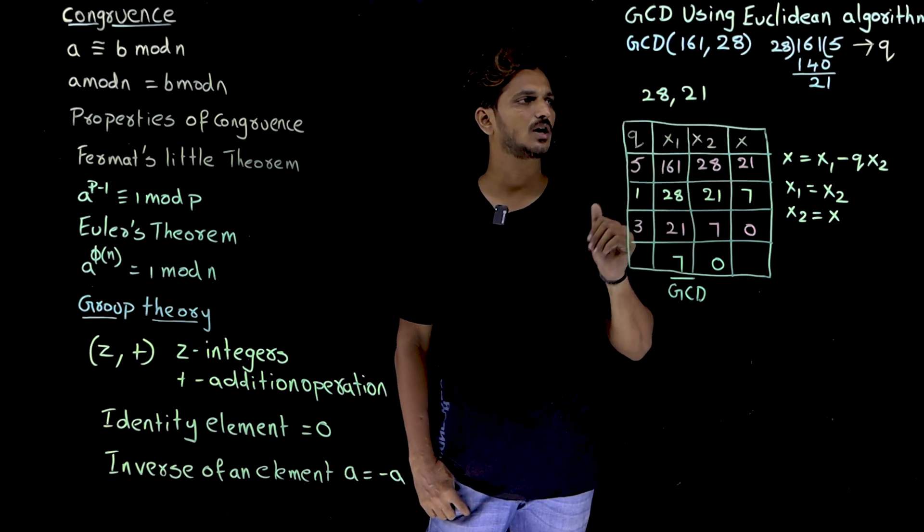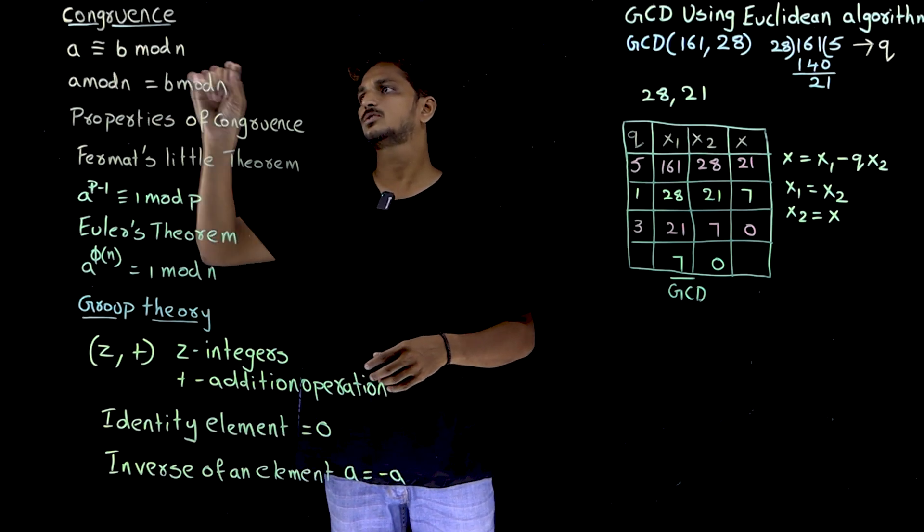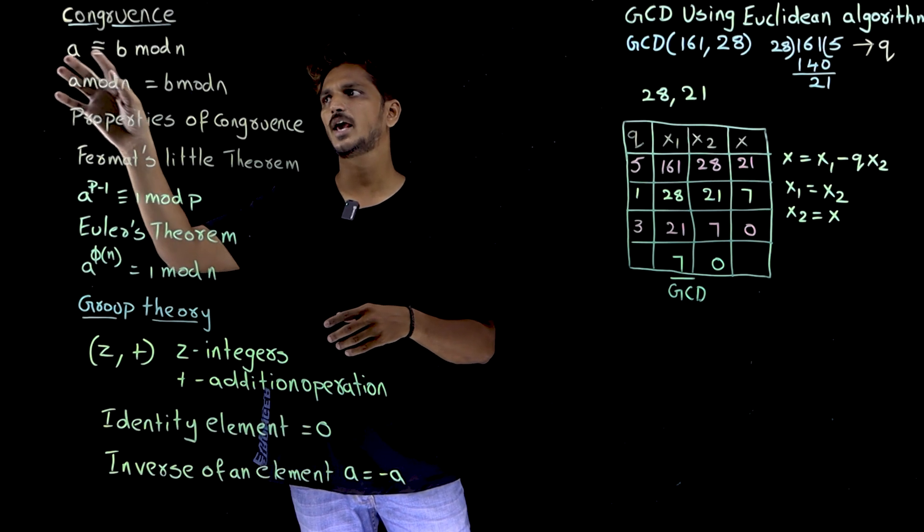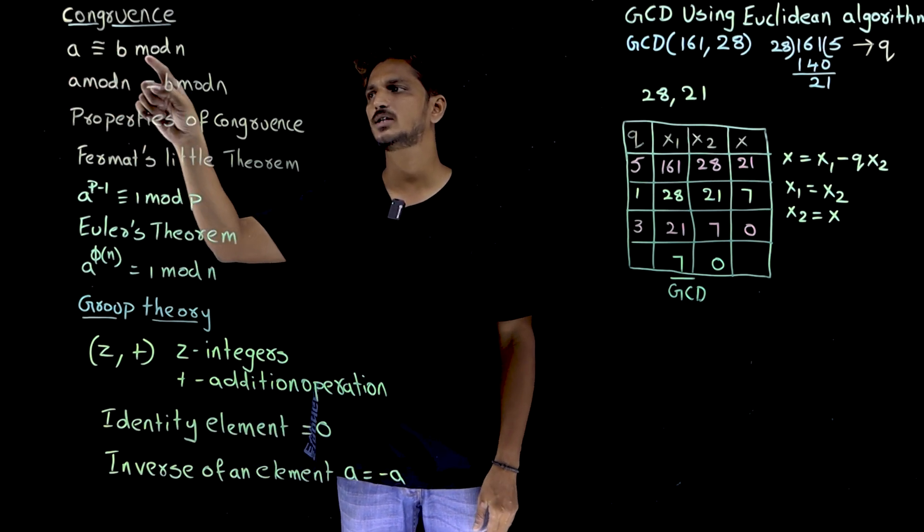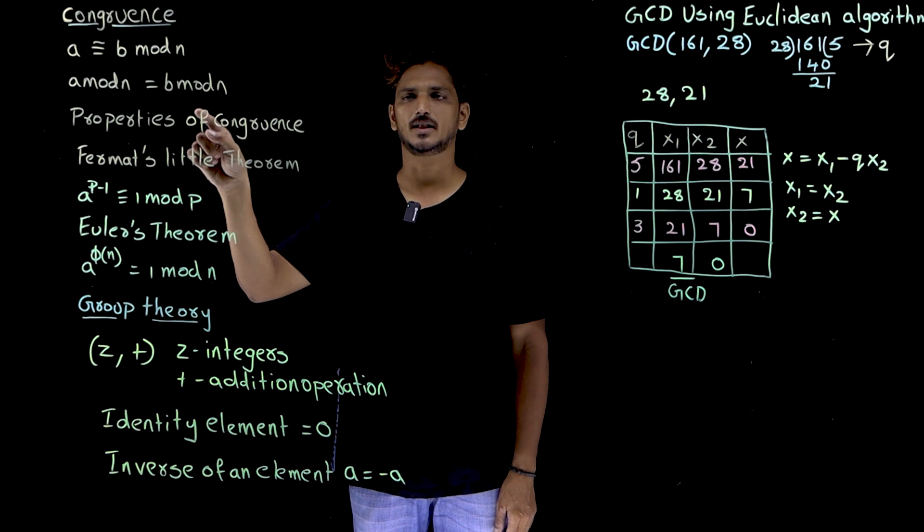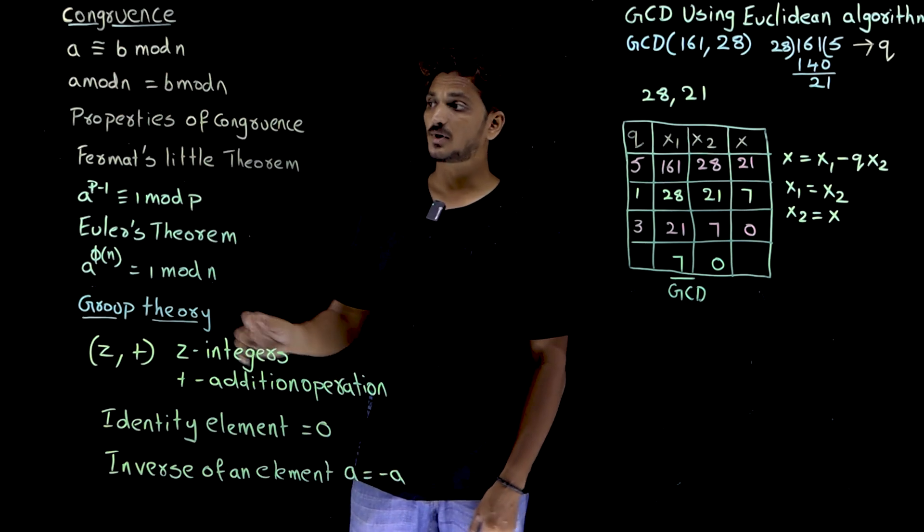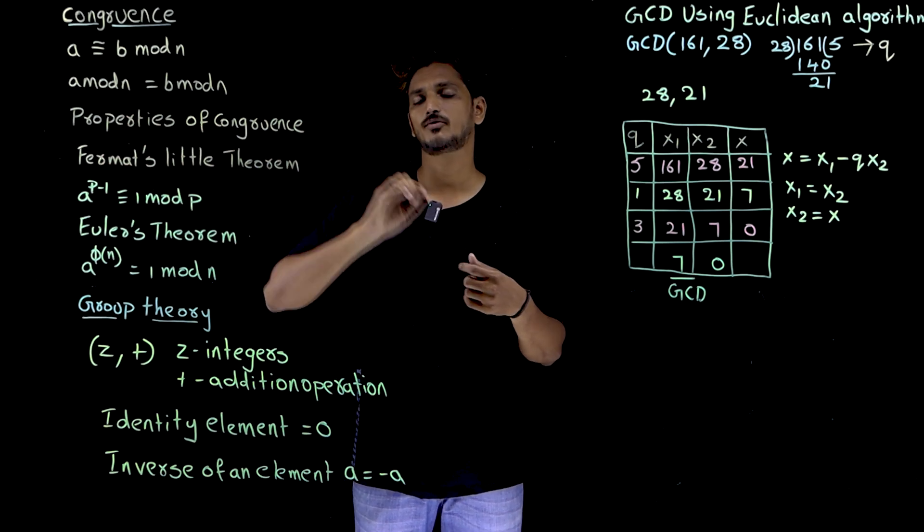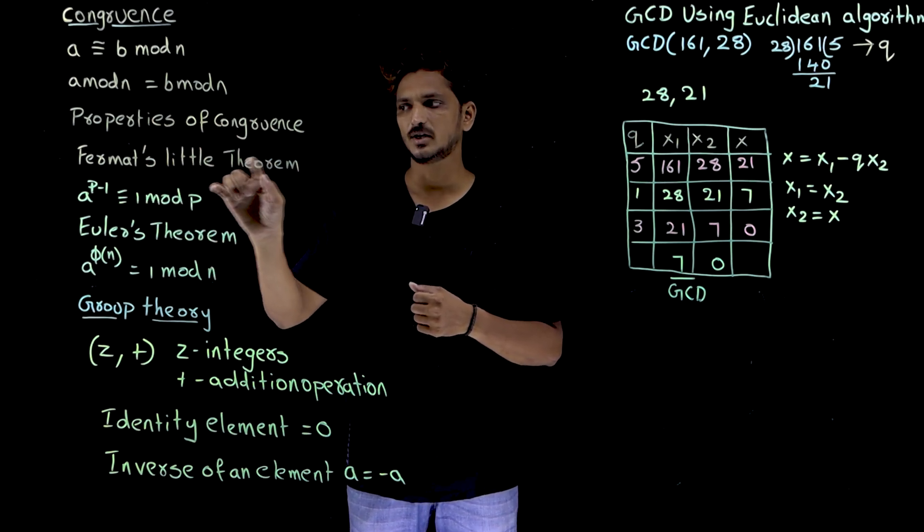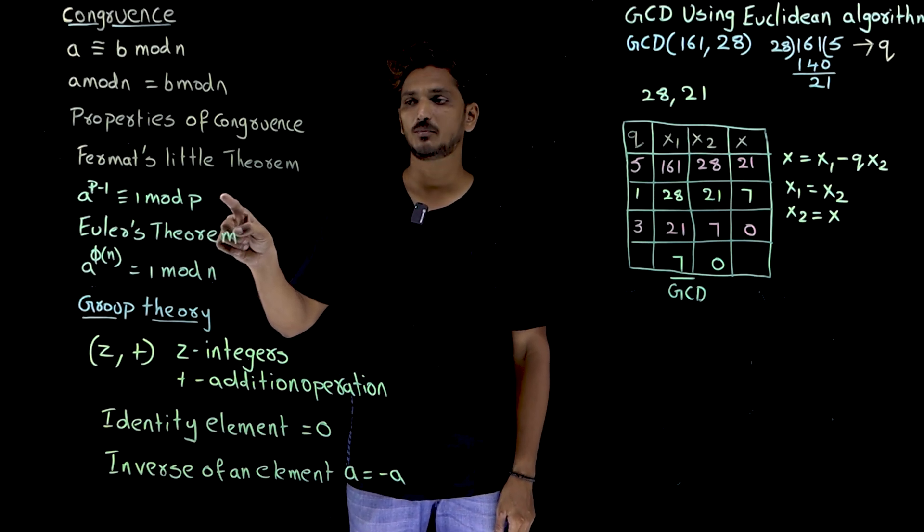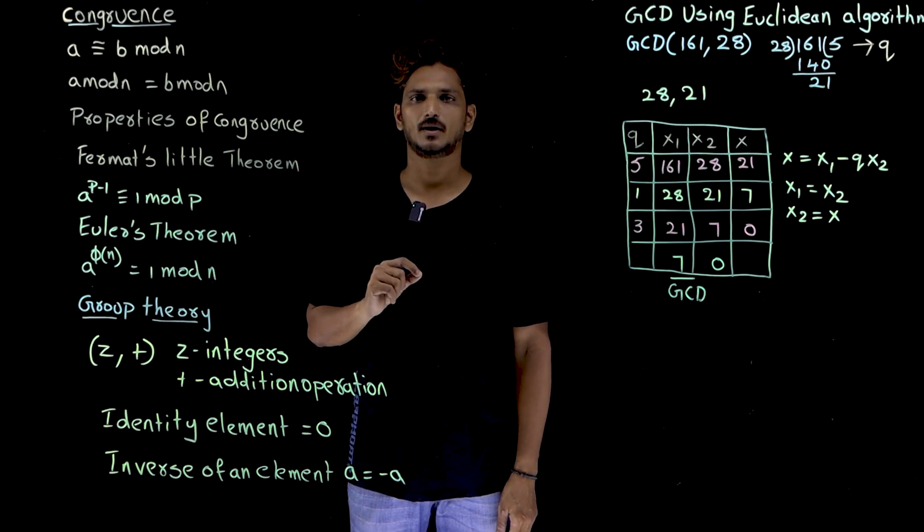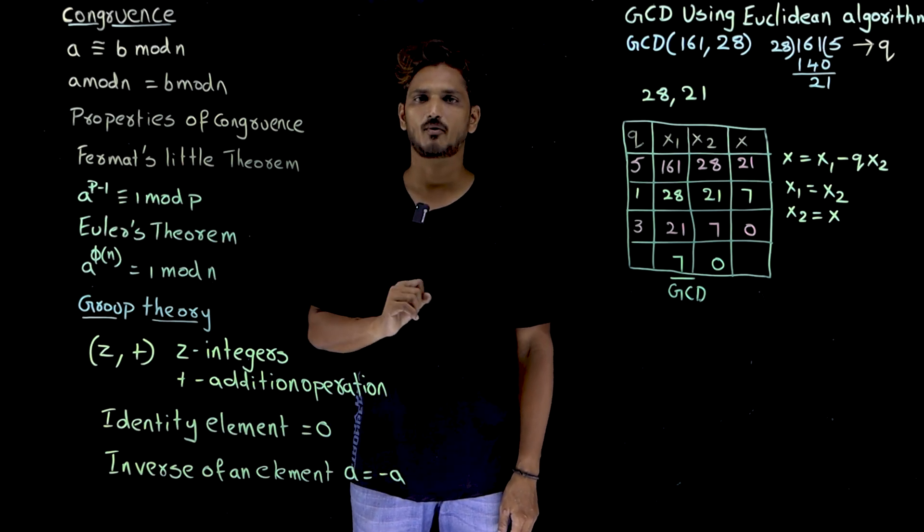These concepts we are going to use in our coming classes. Coming to the next concepts, congruence concept and its properties are used in our coming classes. So just refresh what is congruence means. A congruence, this is the symbol of congruence, A congruence B mod N. It is same as A modulus N equal to B modulus N. Then only we say that A congruence to B modulus N. Similarly, you have to refresh the concept of properties of congruence. And we already discussed, based on these properties of congruence, we have derived the Fermat's little theorem. What is that Fermat's little theorem? If P is a prime number, A power P minus 1 is congruent to 1 mod P.